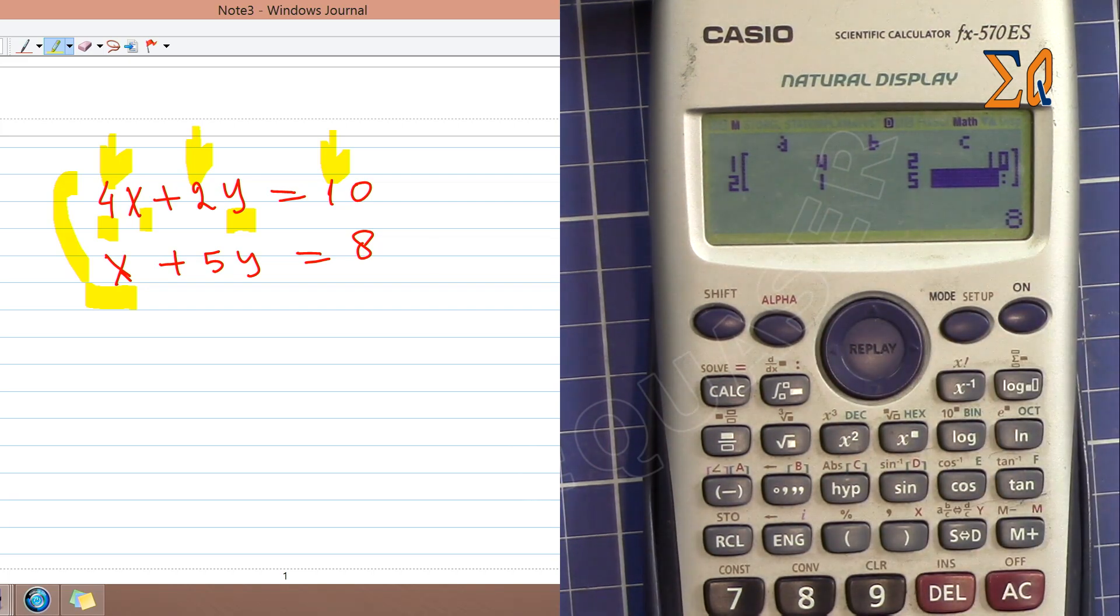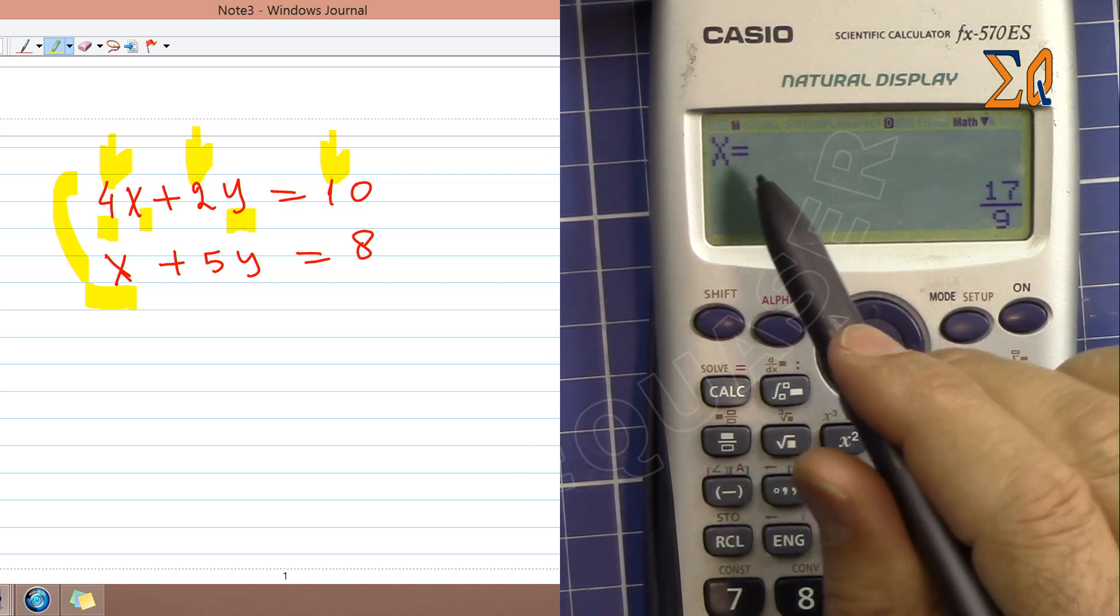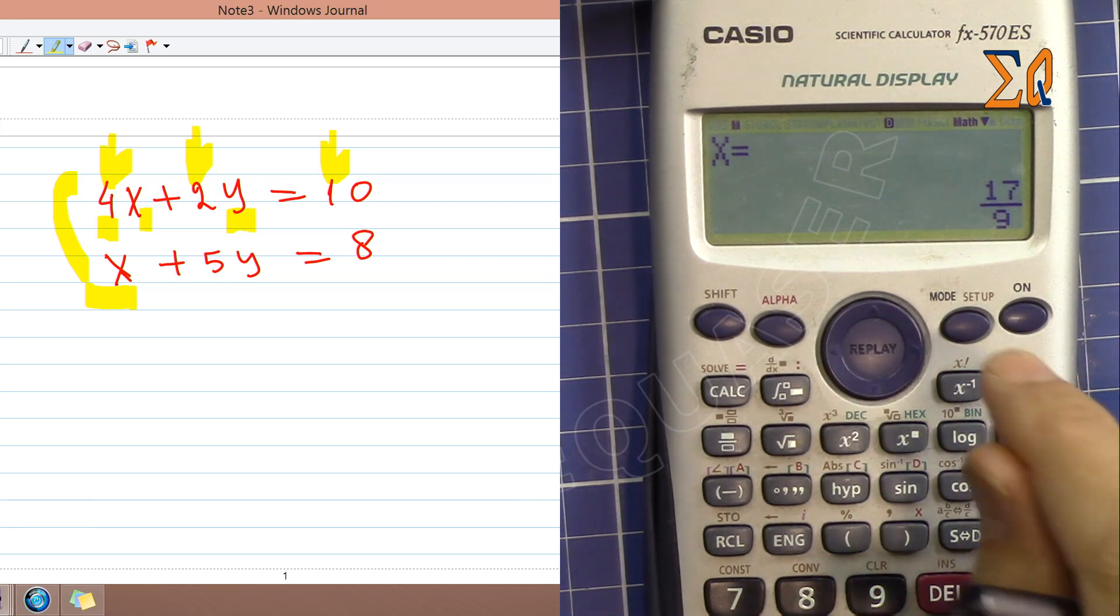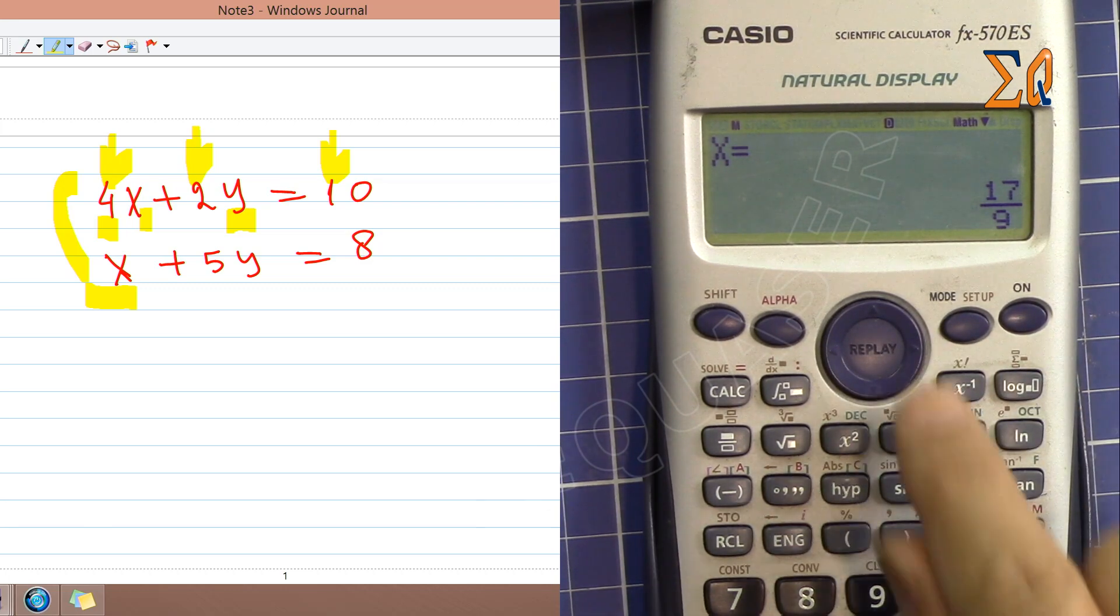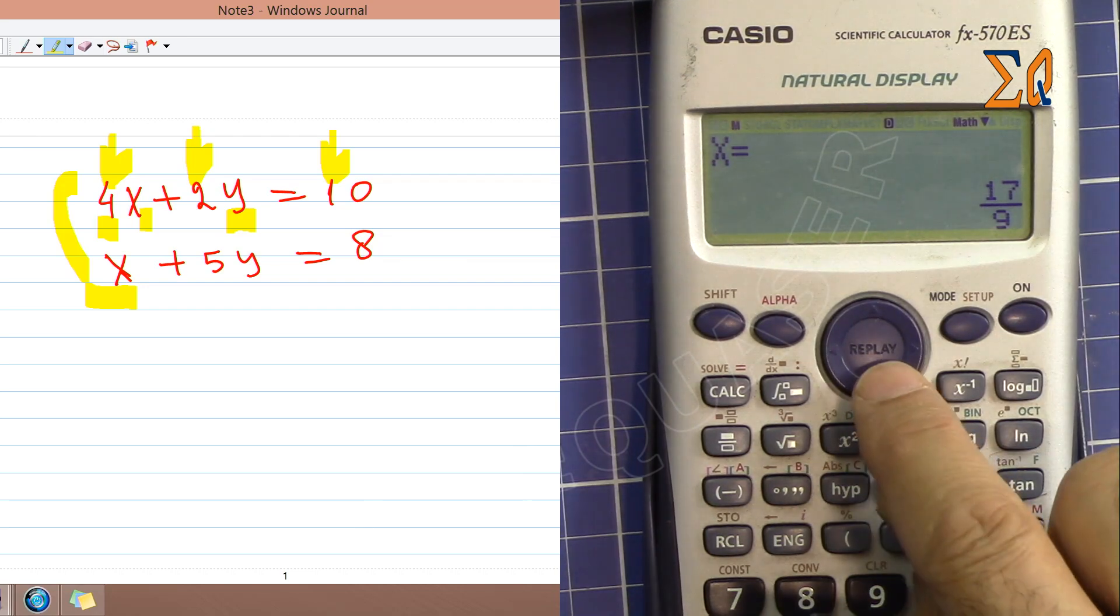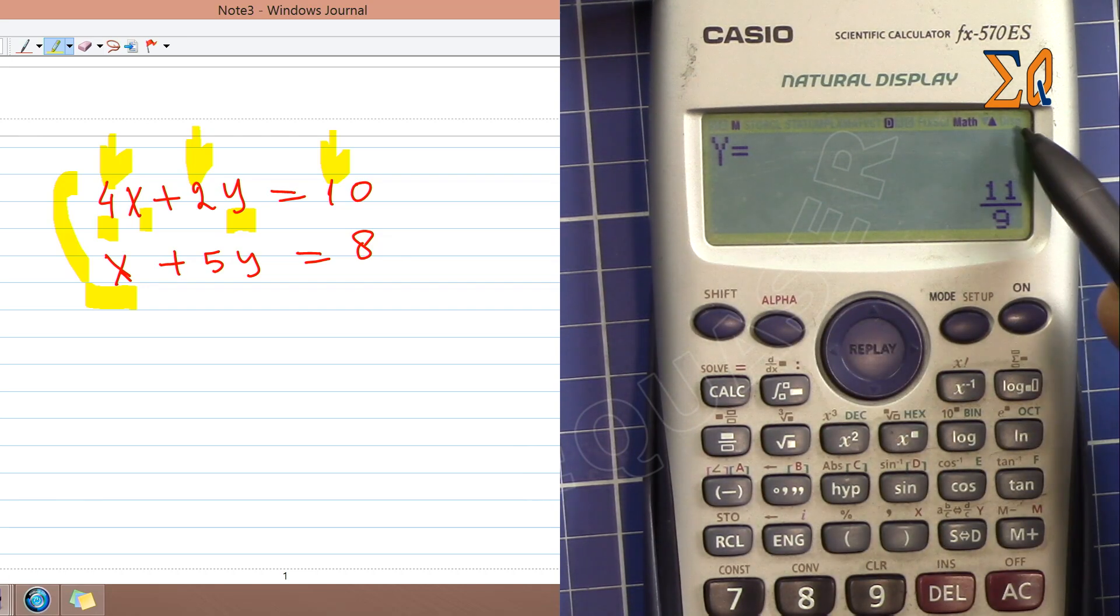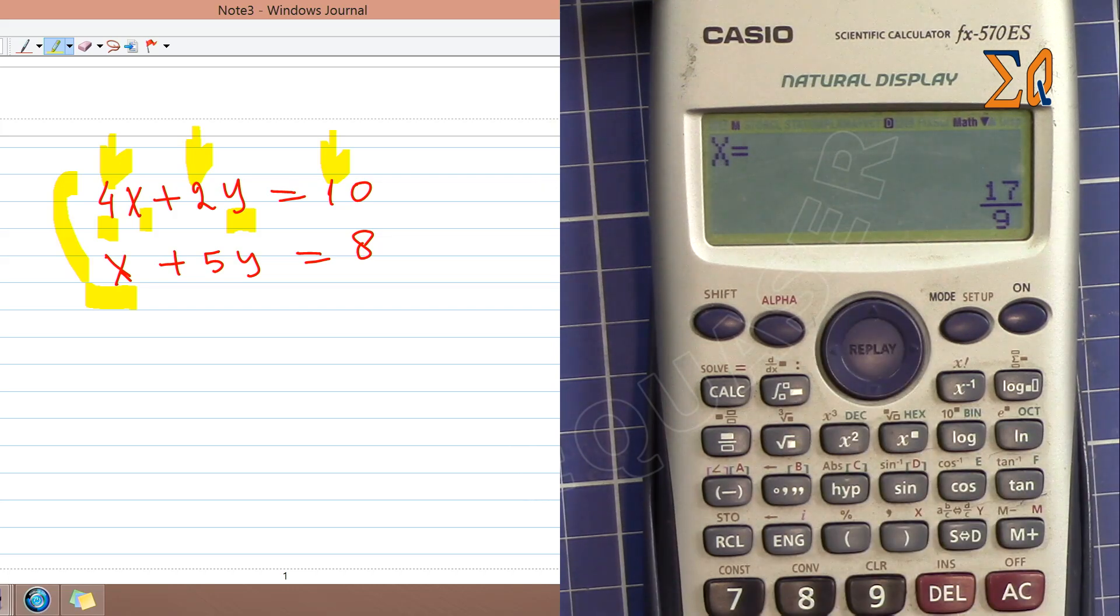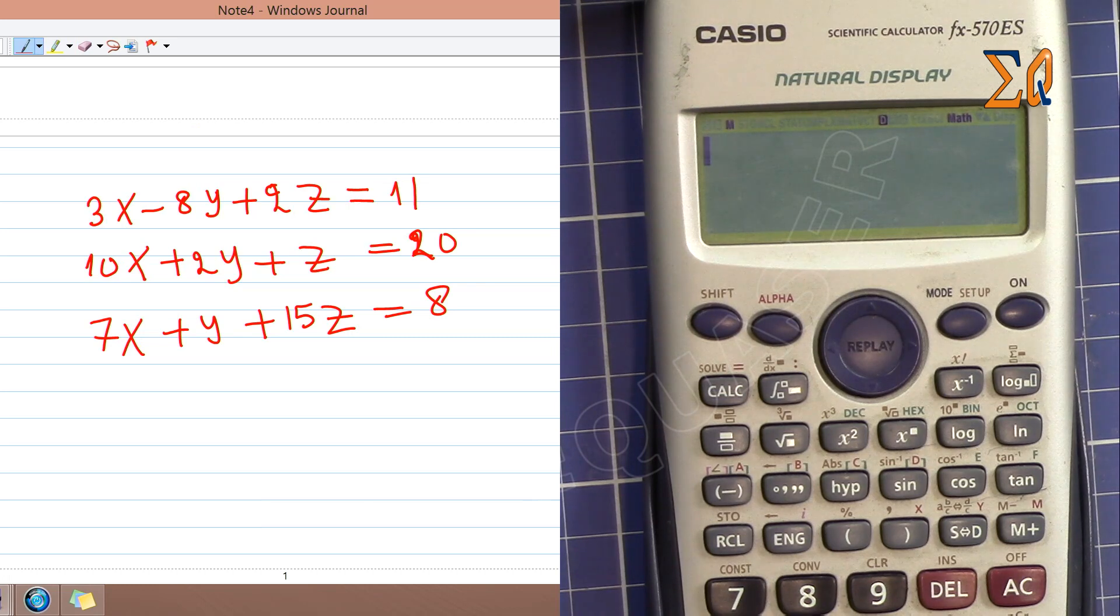Once all the values are entered, press equal sign. You get x is 17 over 9. Then either equal sign or with the arrow. The arrow shows we have more values. You can go to y, which is 11 over 9. If you want to see x again, just go up.